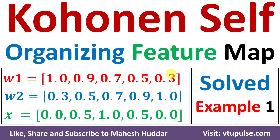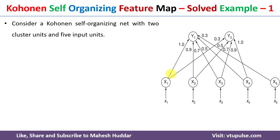Welcome back. In this video I will discuss Kohonen Self-Organizing Feature Map with the help of a simple solved example. This is solved example number one; the link for other examples is given in the description below. In this case, we need to construct the Kohonen self-organizing net with two cluster units and five input units.